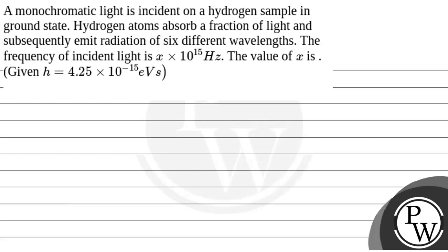Hello. Let's read the question. The question says that a monochromatic light is incident on a hydrogen sample in ground state. Hydrogen atoms absorb a fraction of light and subsequently emit radiation of six different wavelengths. The frequency of incident light is x into 10 to the power 15 hertz. The value of x is given; h is equal to 4.25 into 10 to the power minus 15 electron volt second.